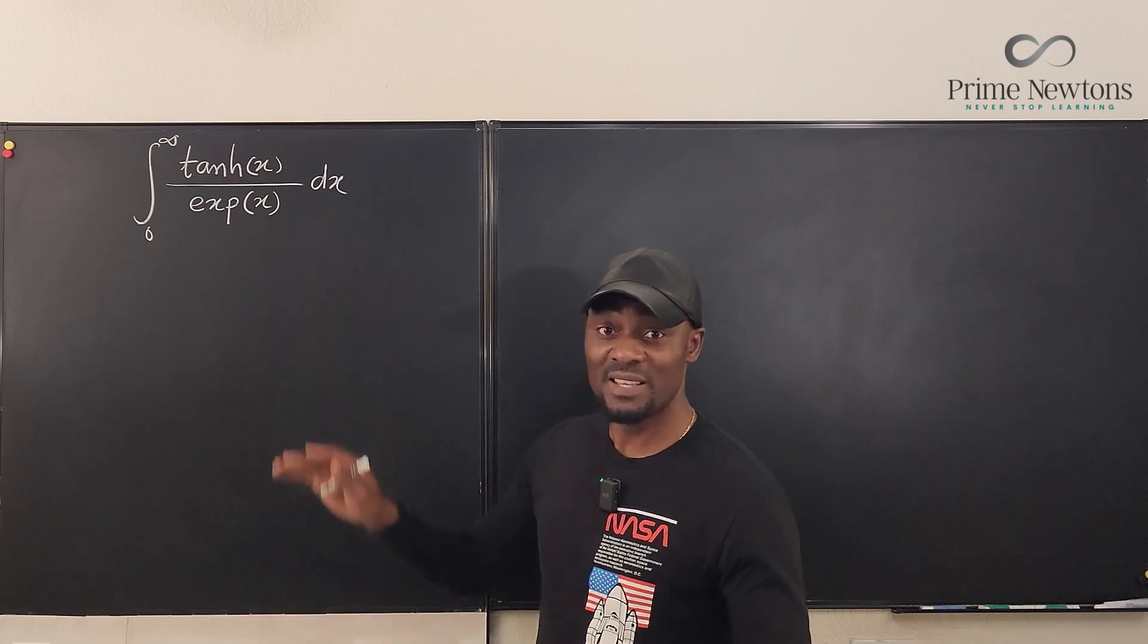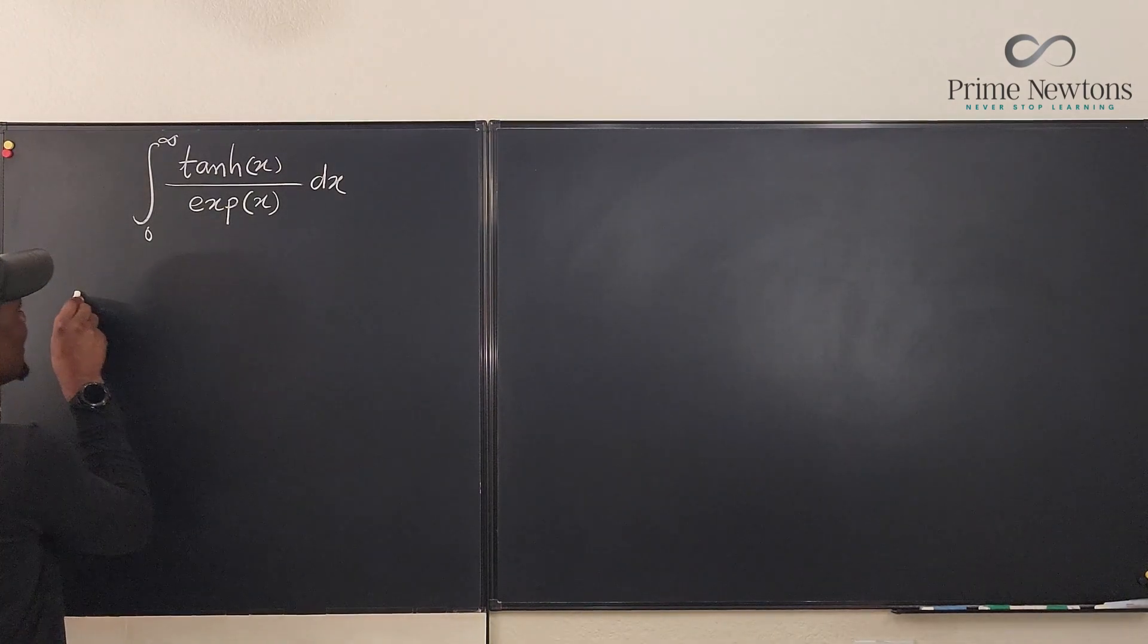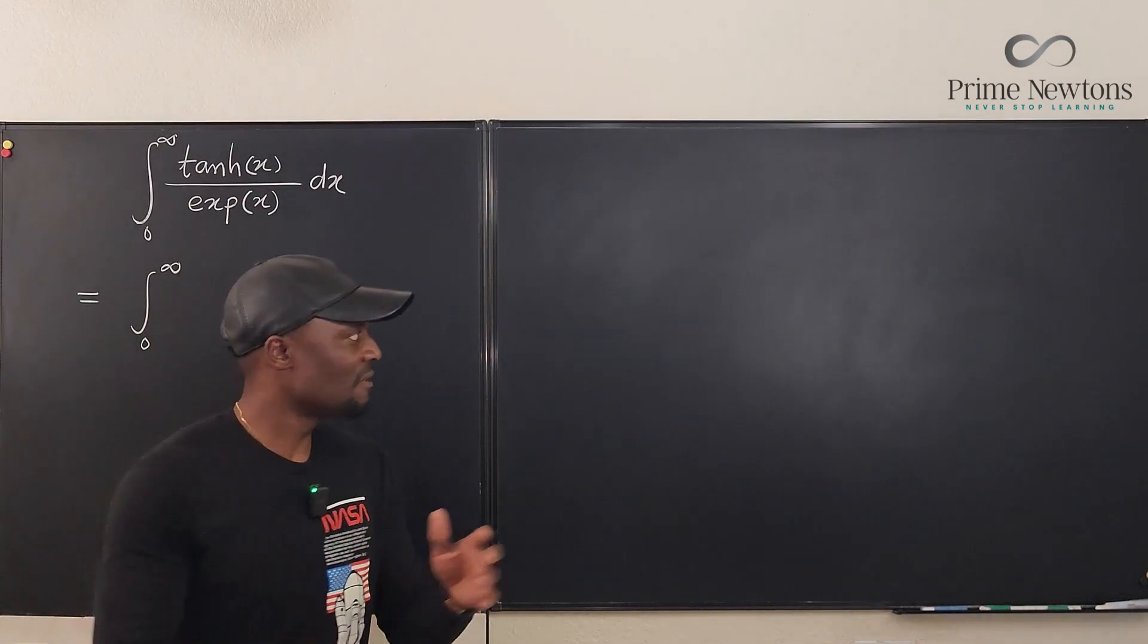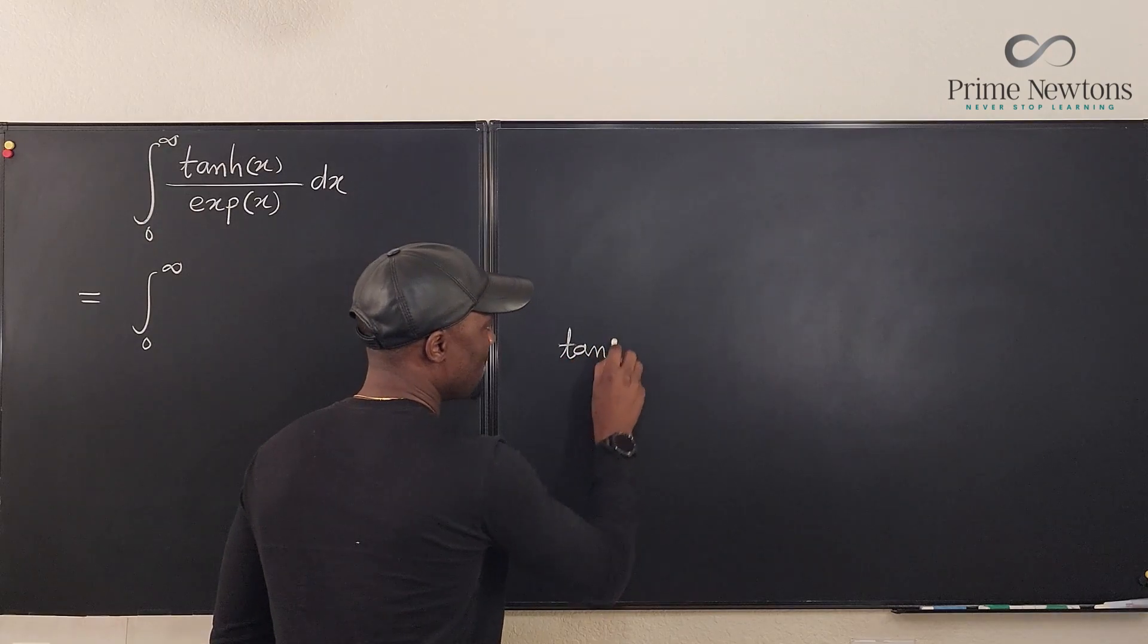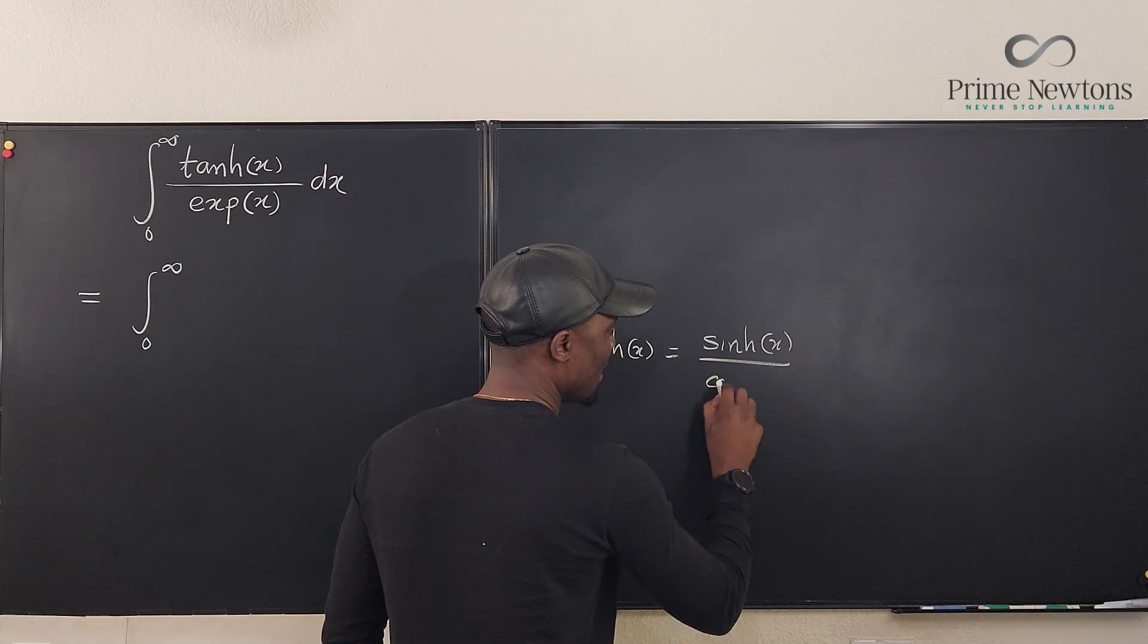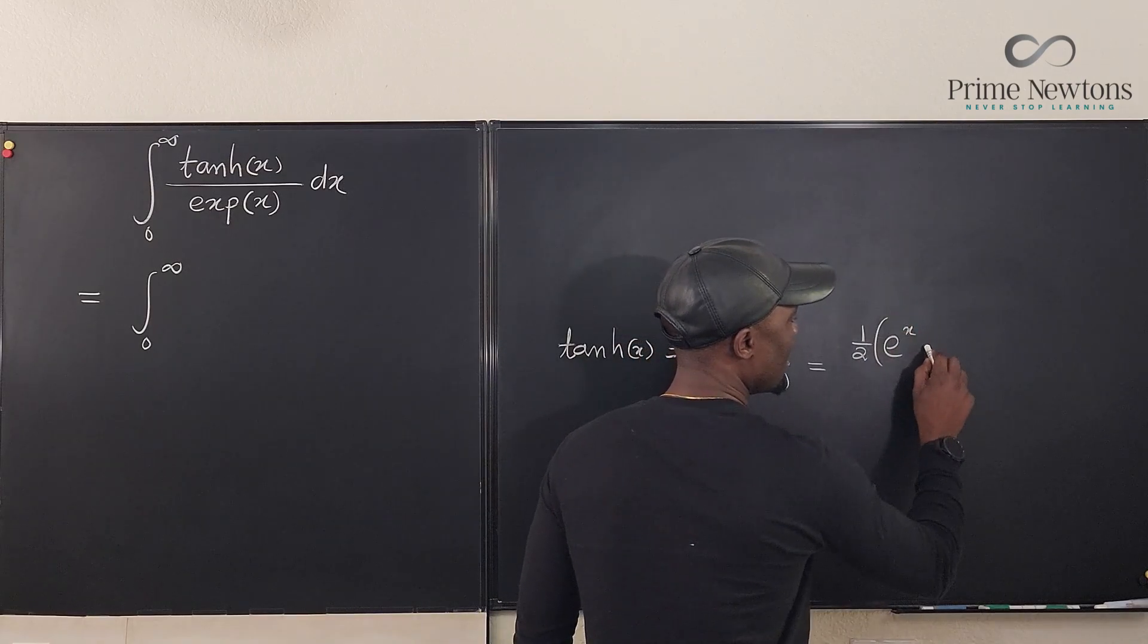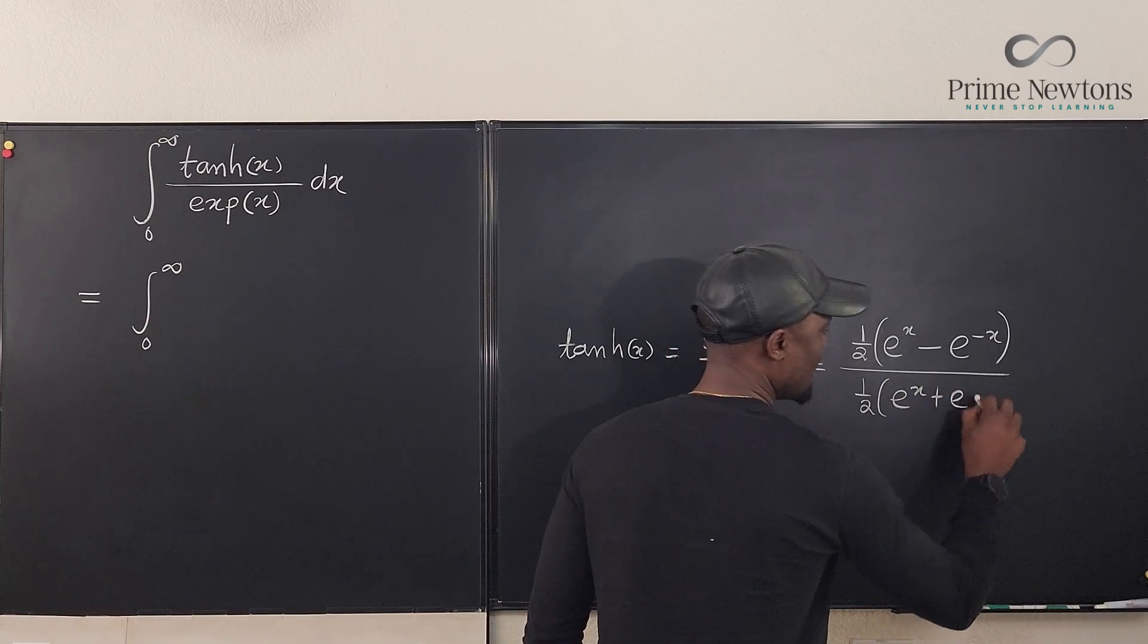So the first thing we're going to do is rewrite this and express everything in terms of e, maybe some great ideas will show up. So the integral is from zero to infinity of hyperbolic tangent. Hyperbolic tangent is the ratio of hyperbolic sine to hyperbolic cosine. So hyperbolic tangent of x is hyperbolic sine of x over hyperbolic cosine of x. This is equal to one half of e to the x minus e to the negative x divided by one half of e to the x plus e to the negative x. Clearly, this one half will cancel this one half.